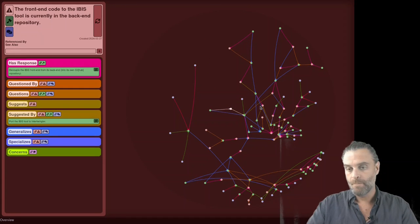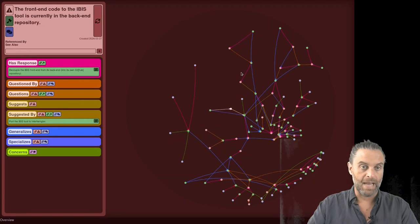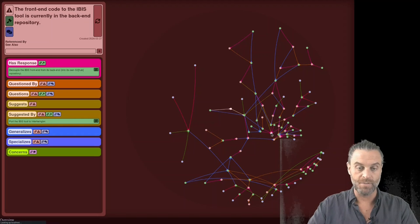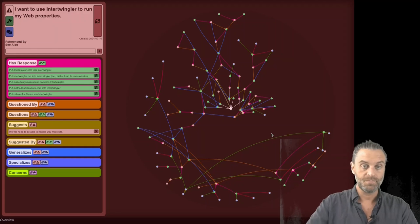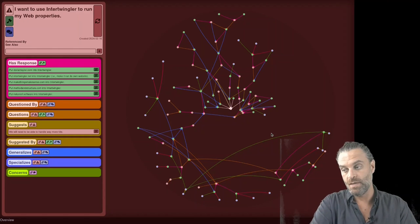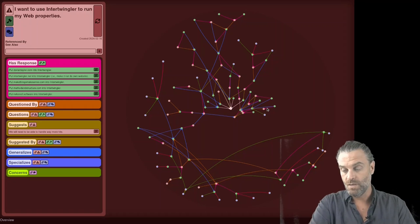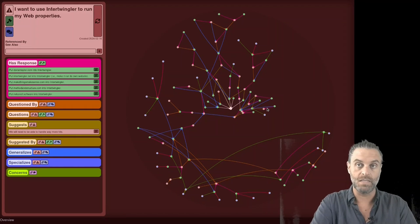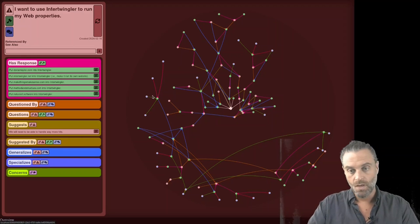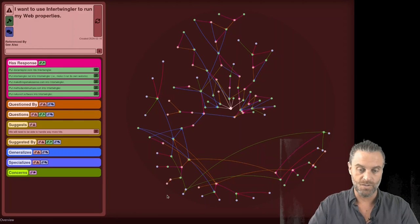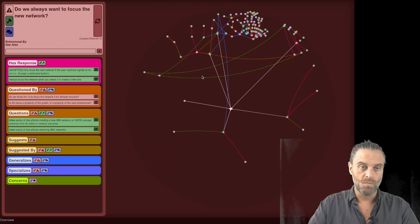Now, this is actually a representation of an issue network about the IBIS tool itself, and the substrate that I intend to be moving this tool onto in the very near future, as in within the next couple weeks, called Inner Twingler, which is a piece of infrastructure that will make it possible to make a much richer tool.